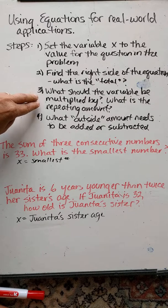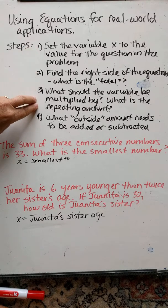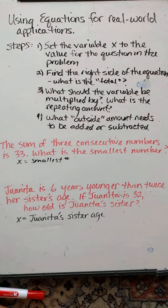The context of the problem kind of always gravitates these two things, items together. And finally, what is any outside amount that needs to be added or subtracted in the equation?